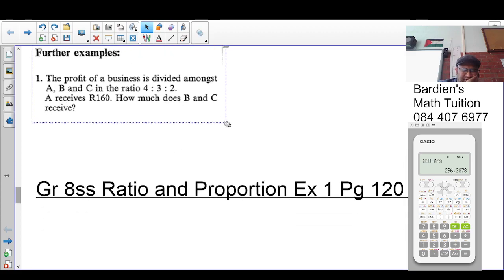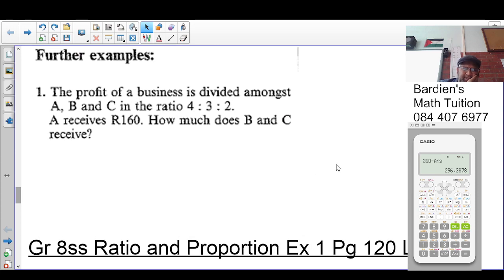What is the ratio and proportion part of the work? We are told that the profit of a business is divided amongst A, B and C in the ratio of 4 is to 3 is to 2. So here we go: A is to B is to C is in the ratio of 4 is to 3 is to 2.